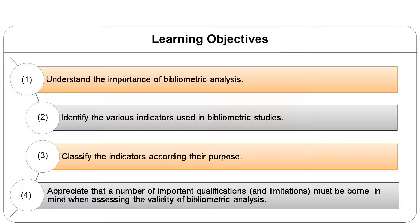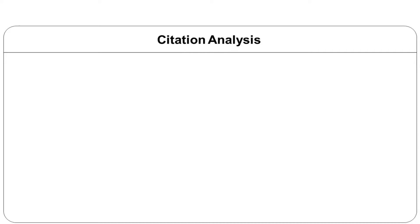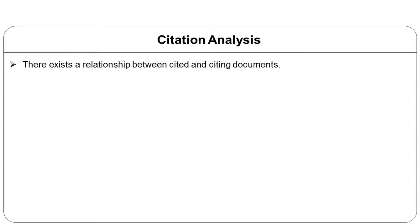You will identify the various indicators used in bibliometric studies and classify the indicators according to their purpose. You will also appreciate that a number of important qualifications must be borne in mind when assessing the validity of bibliometric analysis. Let us try to understand the limitations of citation analysis.